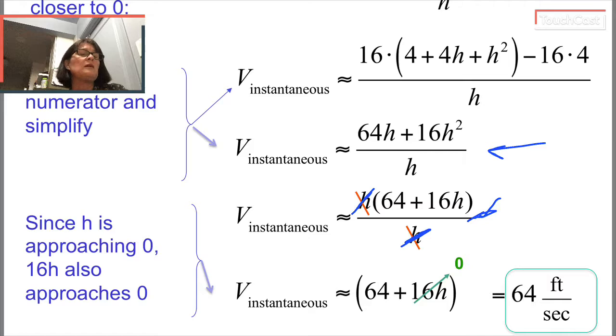And I have this new expression, the instantaneous velocity is, you know, I'm approximating because h isn't 0, but I'm approximating and I get down to this 64 plus 16 times h.